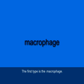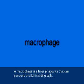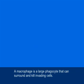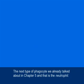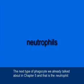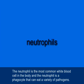The first type is the macrophage. A macrophage is a large phagocyte that can surround and kill invading cells. The next type of phagocyte is the neutrophil, which we talked about in Chapter 5. The neutrophil is the most common white blood cell in the body and is a phagocyte that can eat a variety of pathogens.